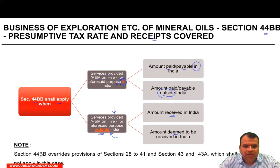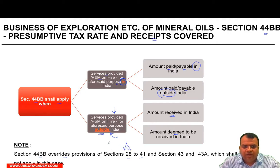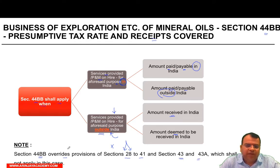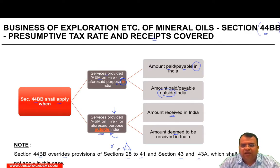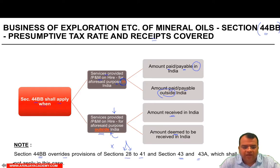Does Section 44BB override other sections? Yes — it overrides Section 28 to 41. This means any deductions available under those sections for computing business income will not be available. Additionally, Sections 43 and 43A shall not apply when computing income under Section 44BB. However, if you opt for normal provisions, those deductions and provisions will apply.